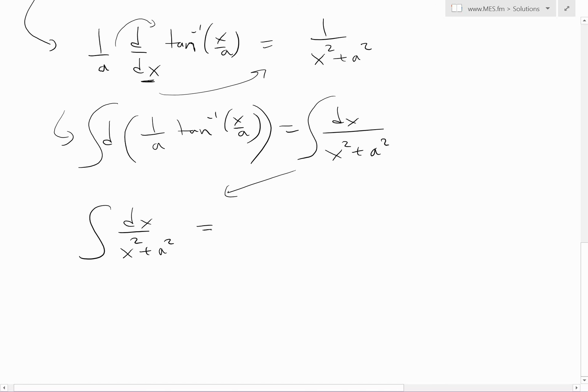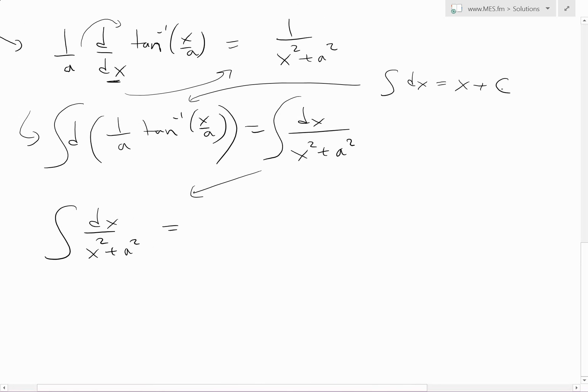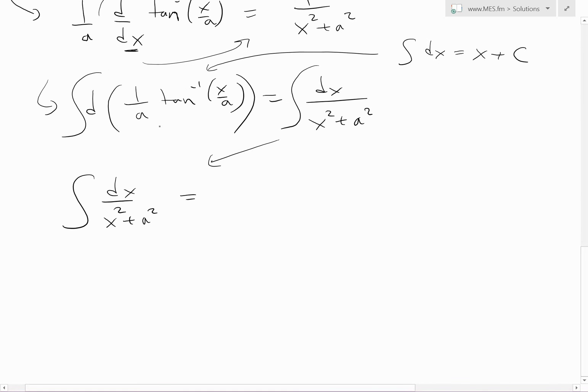We get integral dx over x squared plus a squared. This equals the integral of this side. The stuff inside the bracket is the same thing as integral of dx, which equals x plus c. Instead of this x, we have 1 over a inverse tan of x divided by a. So this equals 1 over a inverse tan of x over a plus c.